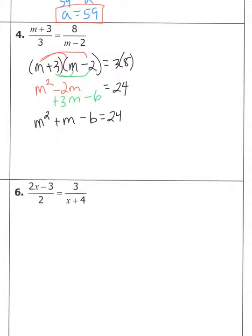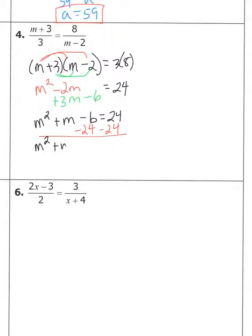This is more difficult because you have an m squared and an m term — they are not like terms. Anytime we have a squared term and a non-squared term, we set one side equal to zero. Moving the 24 over and combining: m squared plus m minus 30 equals zero.